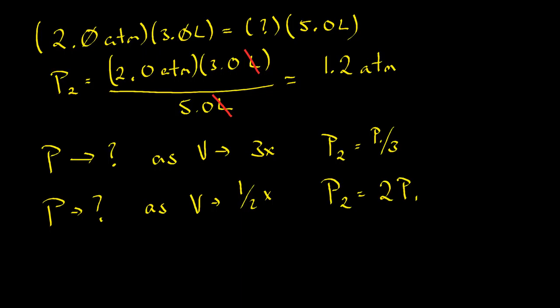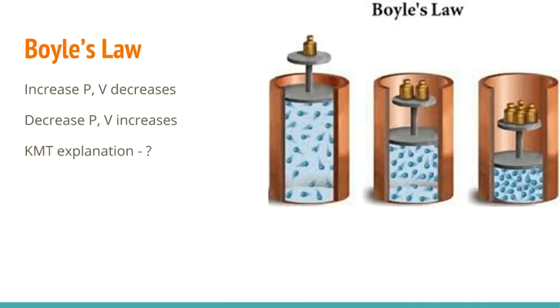Exact same sort of problem. What happens to pressure if you cut the volume in half? Well, the product has to be constant. You cut one in half, you have to double the other. The final pressure is twice the initial pressure. And that is the relationship that you see with Boyle's Law. If pressure goes up, volume goes down. If volume goes up, pressure goes down. It's an inverse relationship. Each one is moving opposite the change that you see in the other.